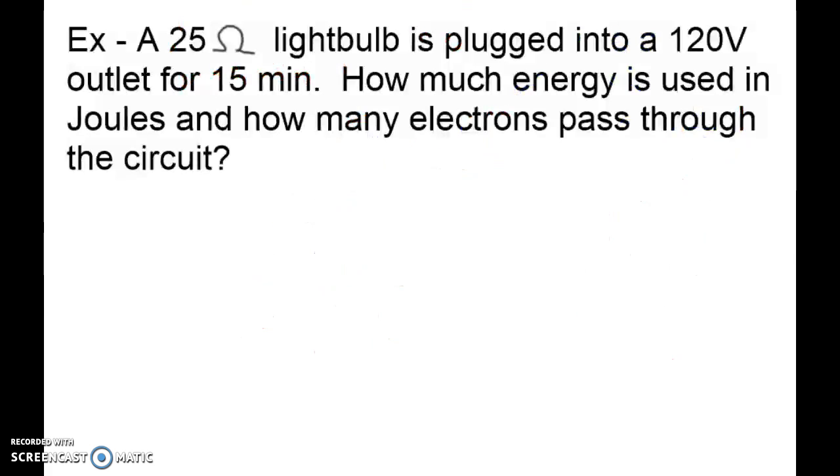So a 25-ohm light bulb is plugged into a 120-volt outlet for 15 minutes. How much energy is used in joules and how many electrons pass through the circuit? In this example here, we're describing a light bulb that has resistance of 25 ohms. Now what happens is when this light bulb is plugged into a 120-volt outlet for 15 minutes, we want to ask how much energy is used in the joules and how many electrons pass through the circuit. So we're looking for two things.